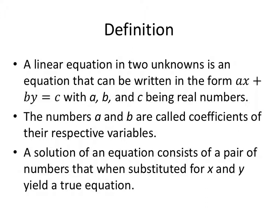Let's start with a definition. A linear equation in two unknowns is an equation that can be written in the form ax plus by equals c with a, b, and c being real numbers. The numbers a and b are called coefficients of their respective variables. A solution of an equation consists of a pair of numbers that when substituted for x and y yield a true equation. So a solution, when I put in a number for x and a number for y, we have true equality. It's the point x comma y, the coordinates.